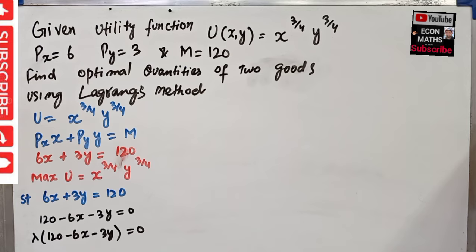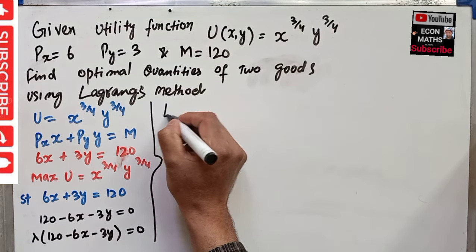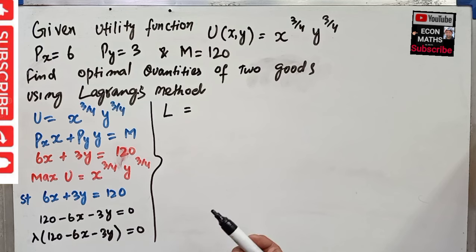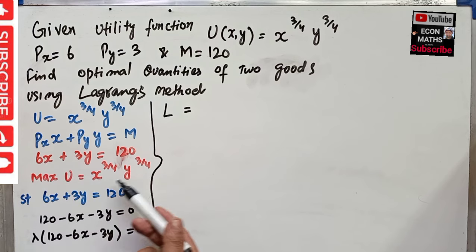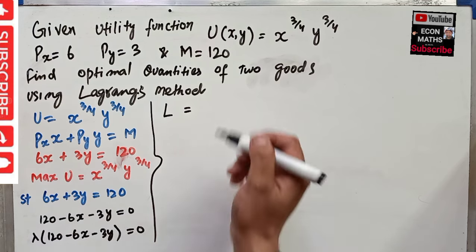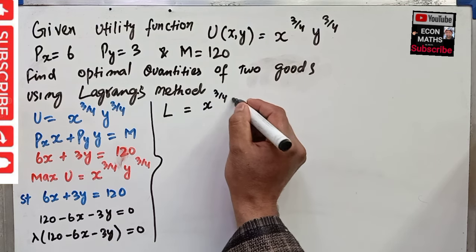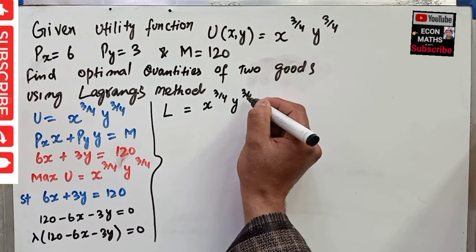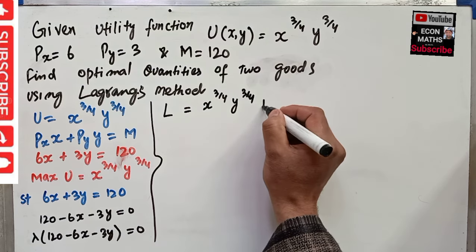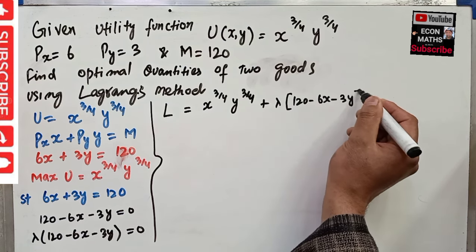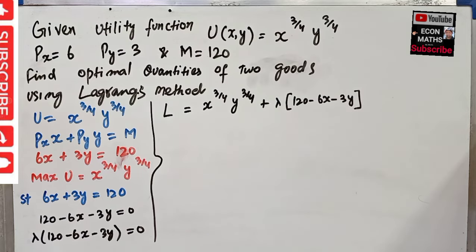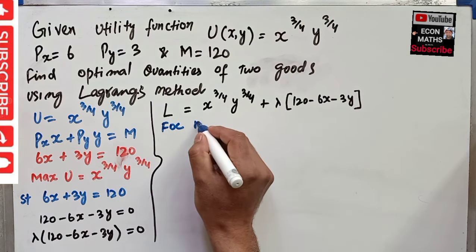The third step is to form the Lagrangian function. The Lagrangian function L is formed by adding the utility function and the new resulting budget constraint term. So we write L = x^(3/4) * y^(3/4) + lambda * (120 - 6x - 3y). This is our Lagrangian function.